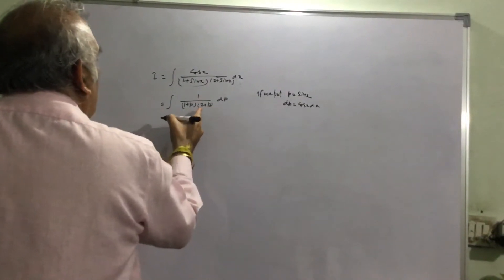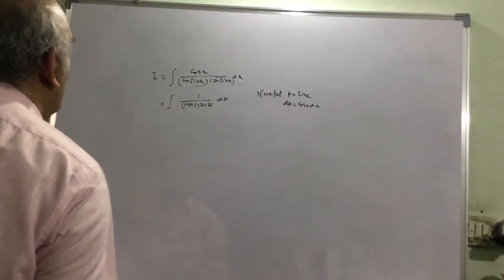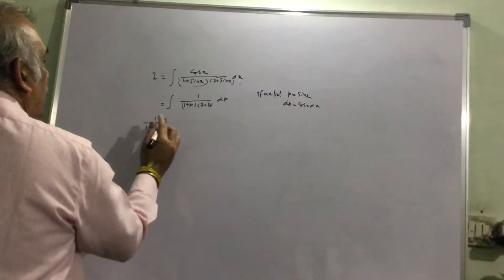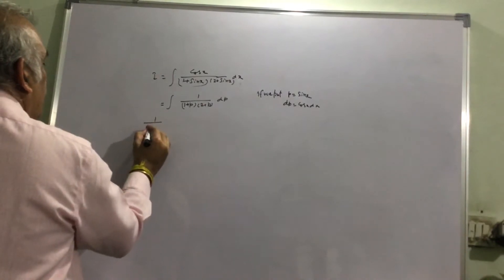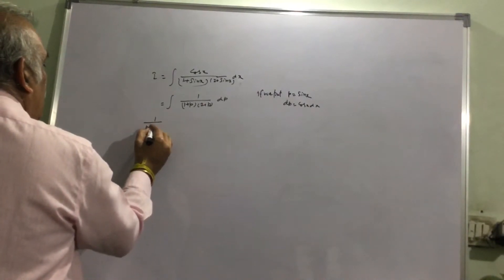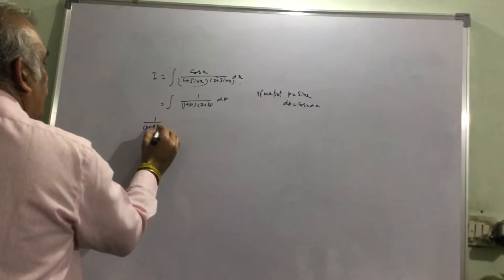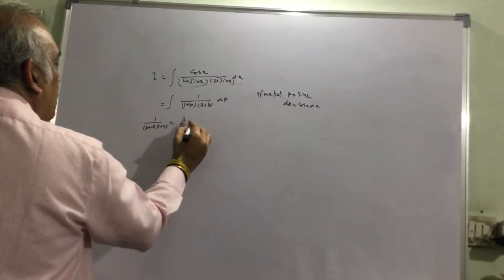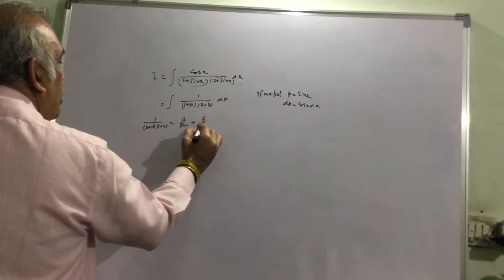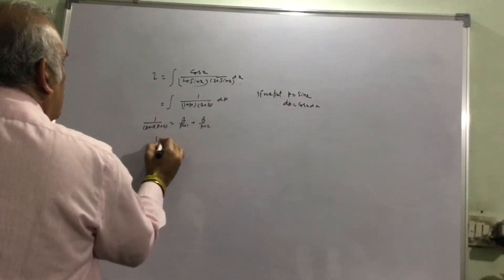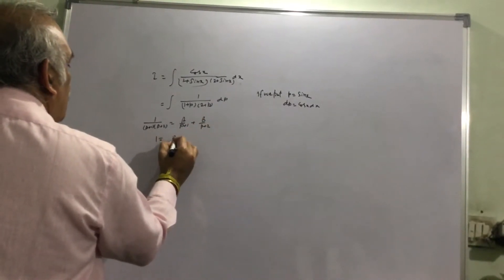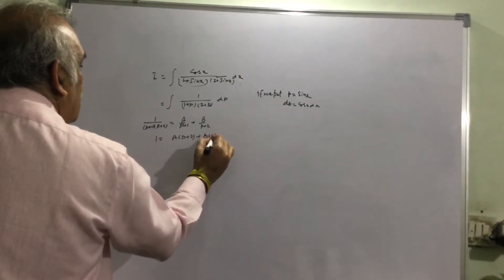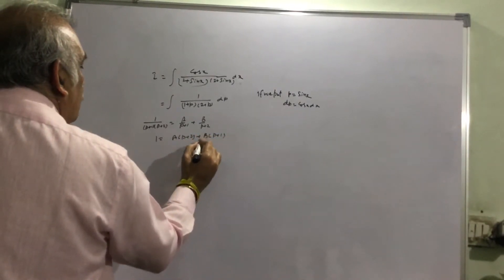So we will break this integral into partial fractions. We write 1 over (p plus 1)(p plus 2) equal to A divided by (p plus 1) plus B divided by (p plus 2). So 1 equals A(p plus 2) plus B(p plus 1).